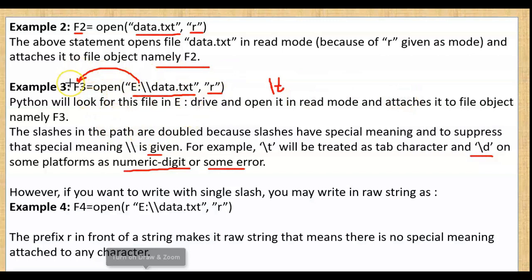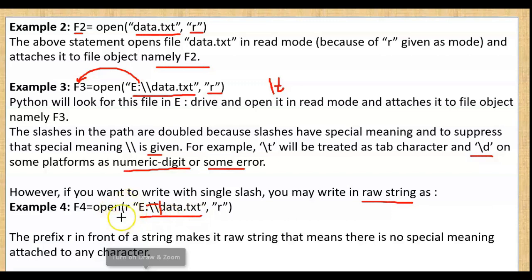However, if you want to write the path with a single slash, you can use a raw string. In a raw string, you don't have to double the backslash — you use only a single slash. A raw string means there is no special meaning attached to any character inside that string.